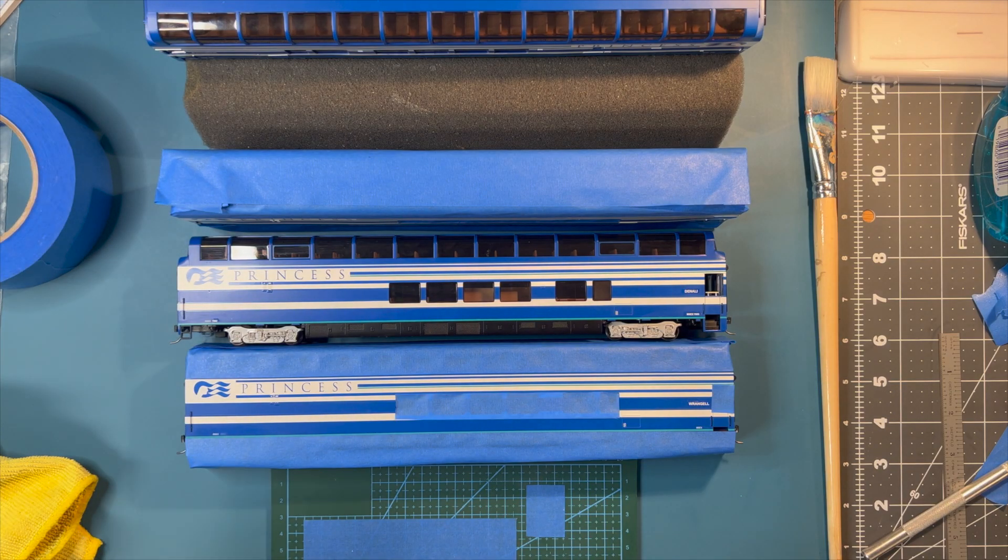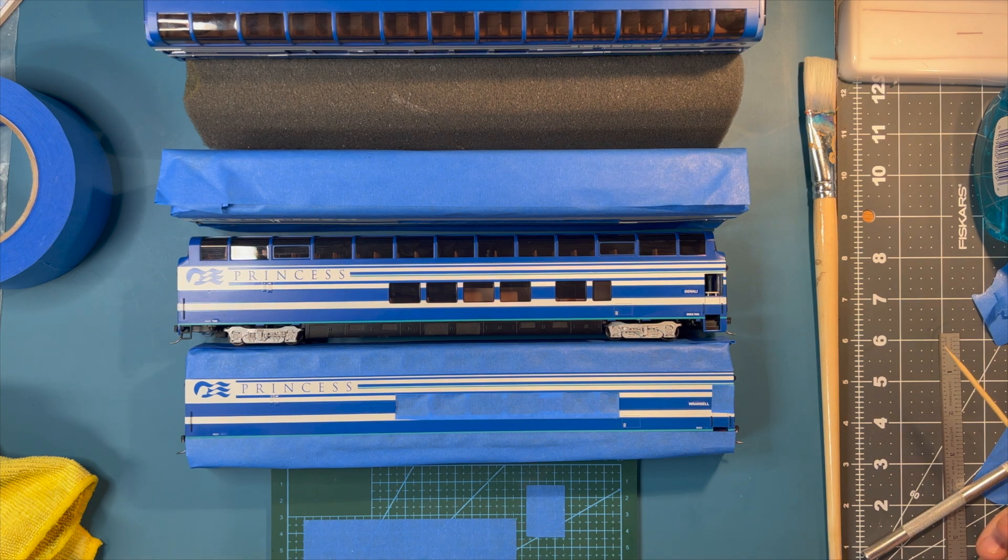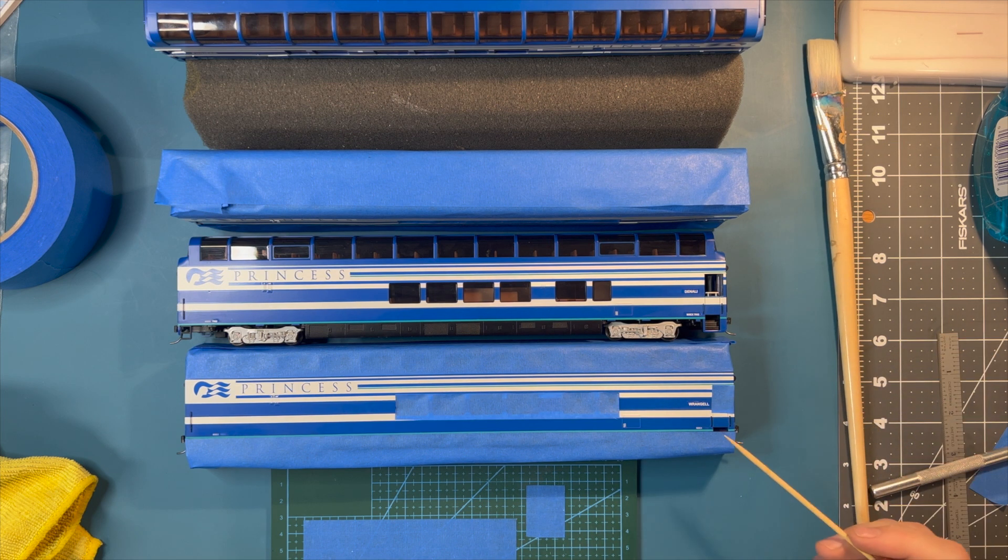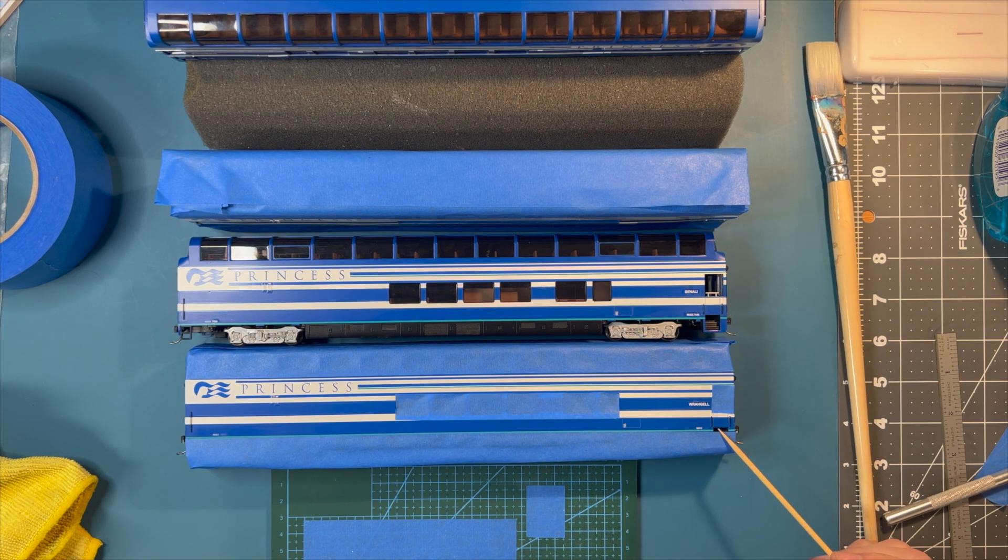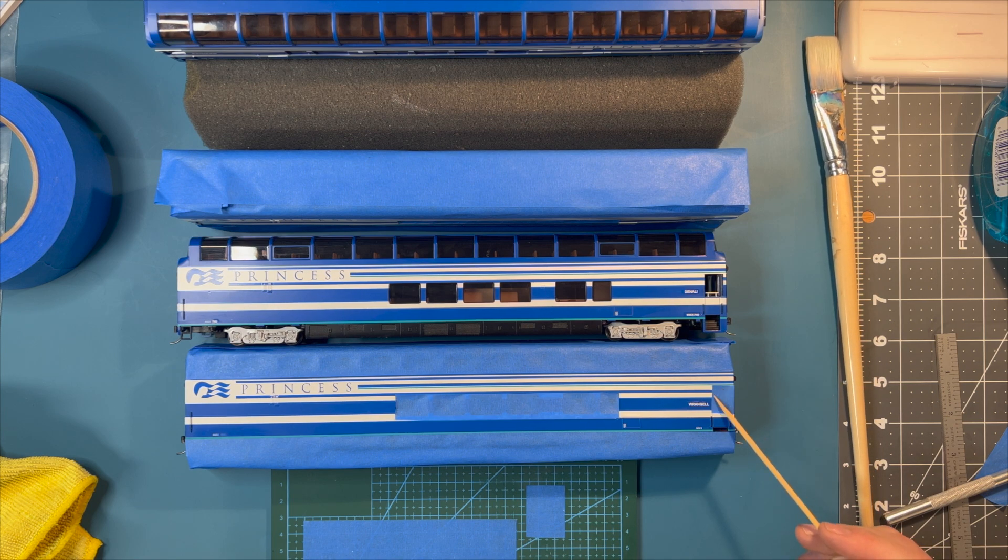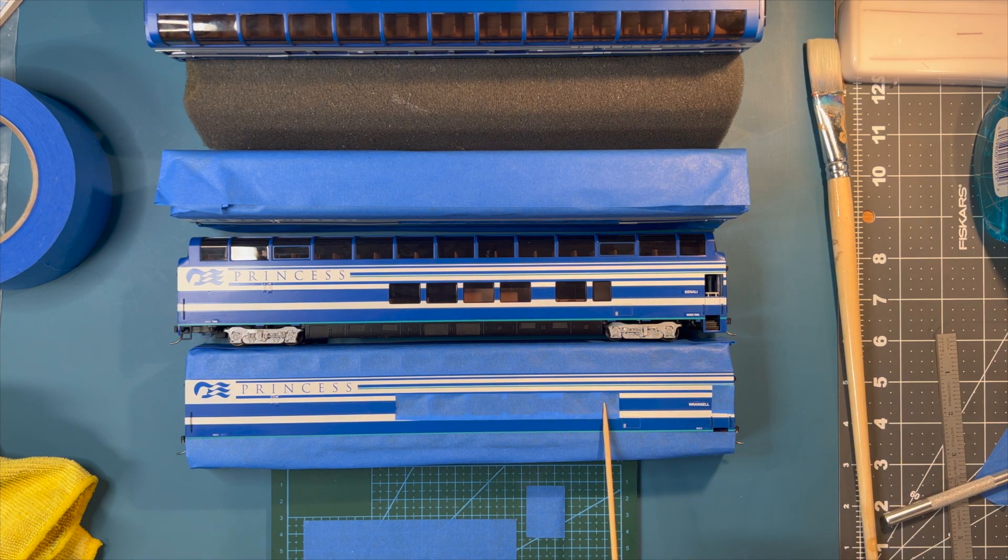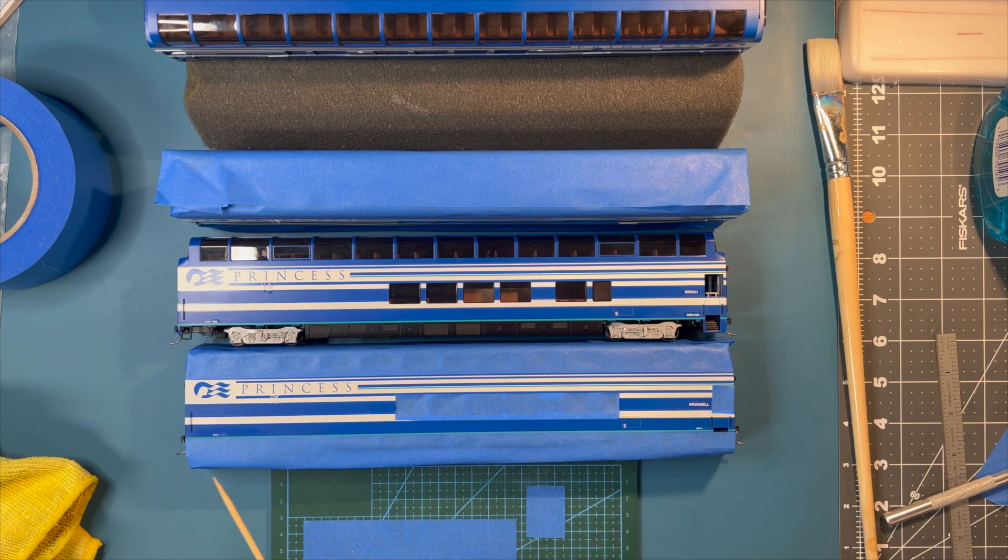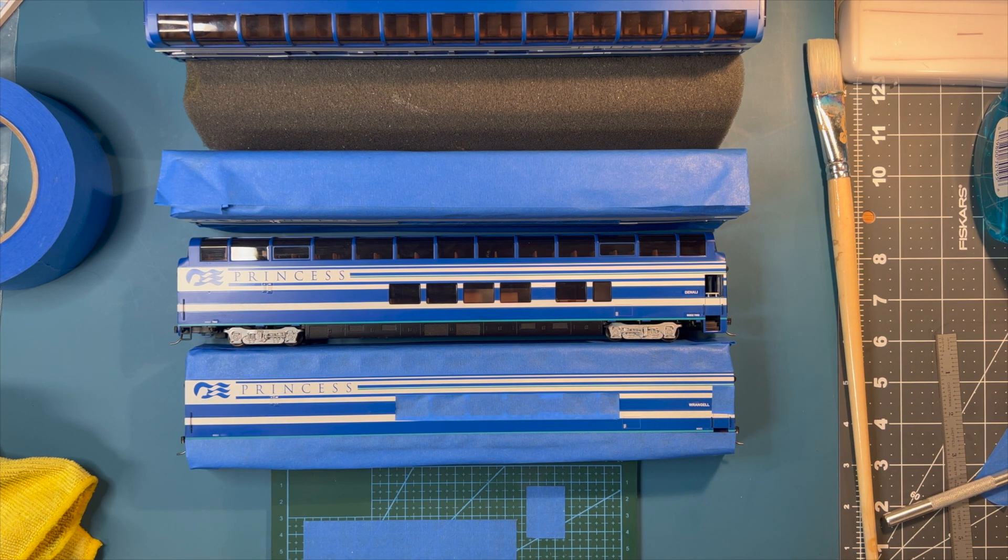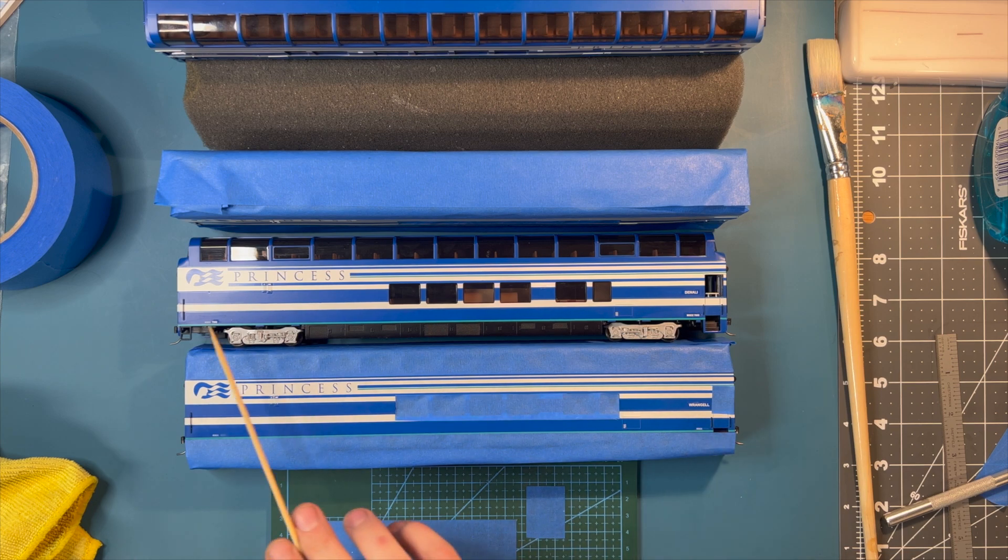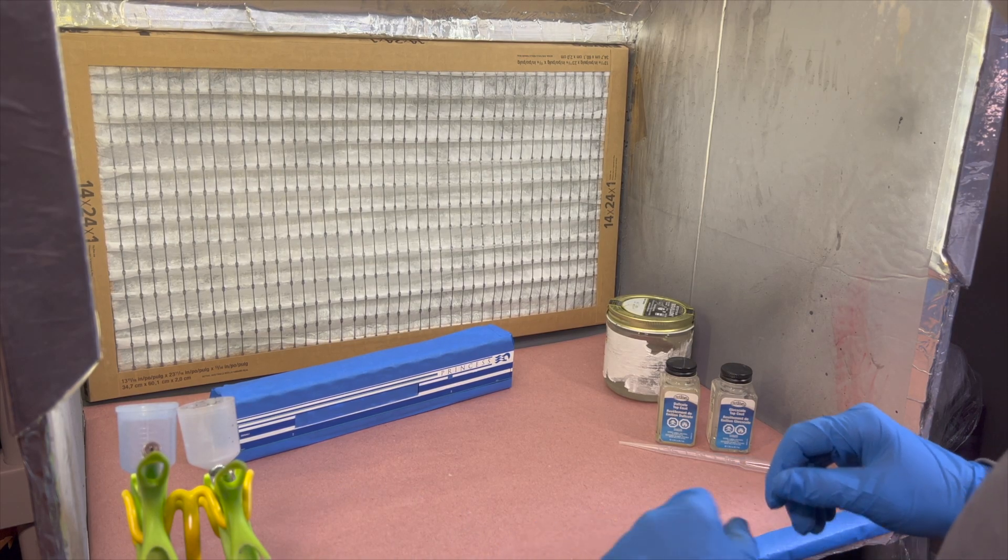So this is the point that my lapel mic decided to go on vacation and left me with no audio. But I turned around and taped off all of the upper windows, the side windows, taped off the trucks and the lower section because I just want to dull coat the center section to protect the decals. I also taped off the side openings for the steps to protect the backside of the end windows. So let's go ahead and move over to the spray booth here.